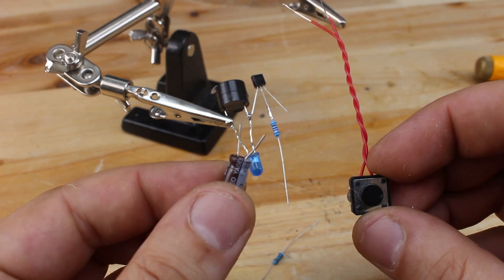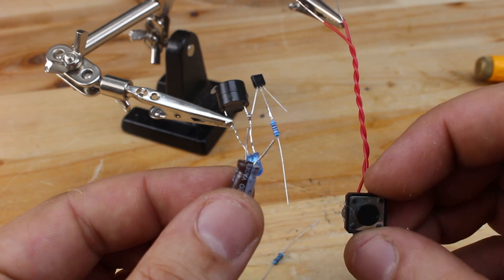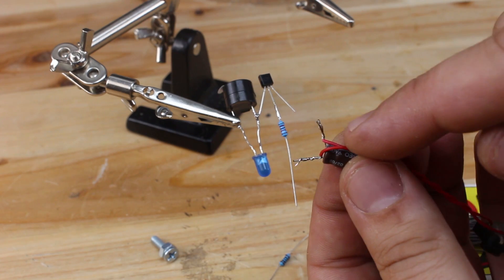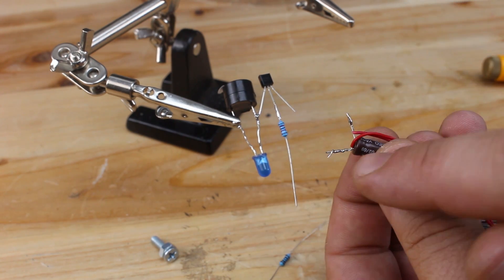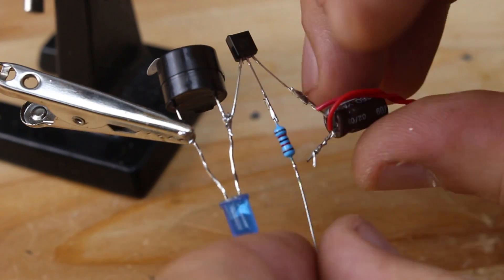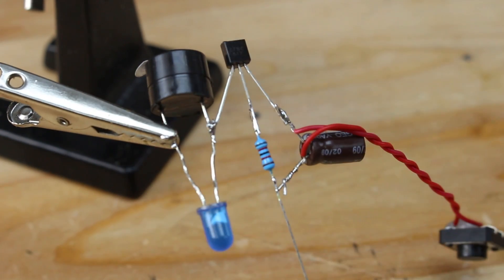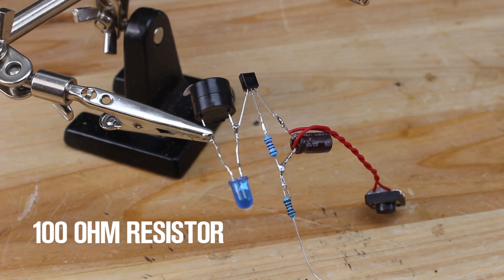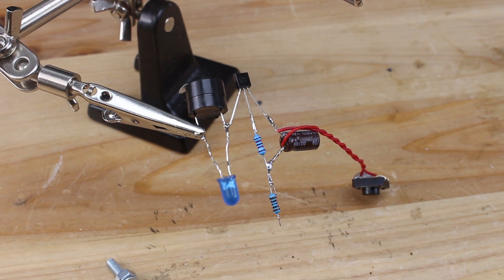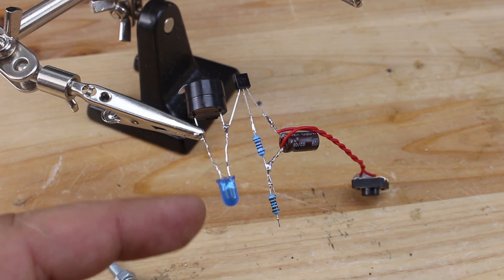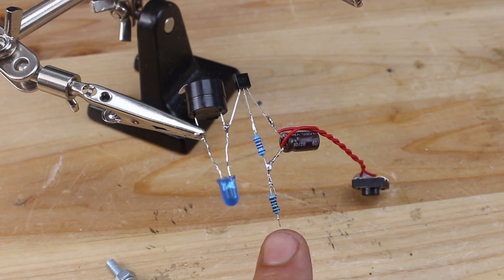Also, the push switch and the capacitor, we're going to connect in parallel connection. The negative terminal for capacitor, we're going to solder to the emitter and other on the resistor. The sensor wires we're going to solder on positive wires from piezo and LED and other on 100 ohm resistor.